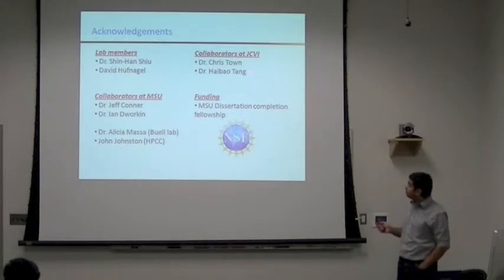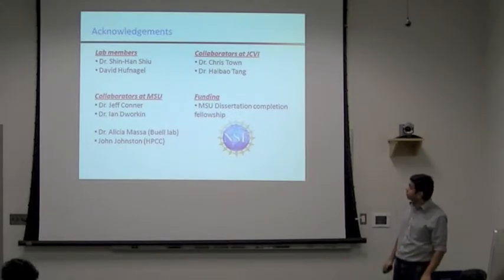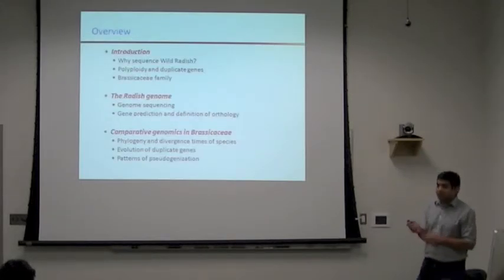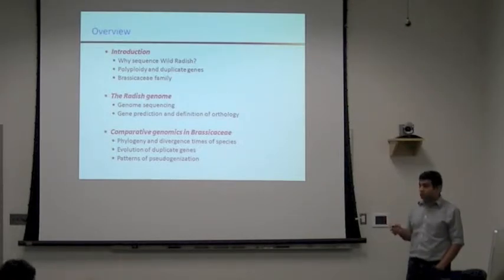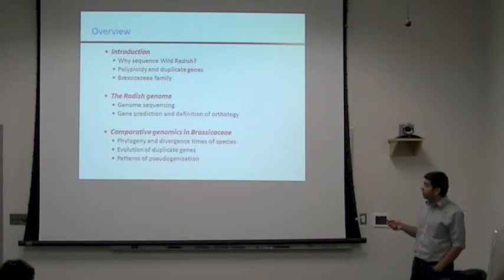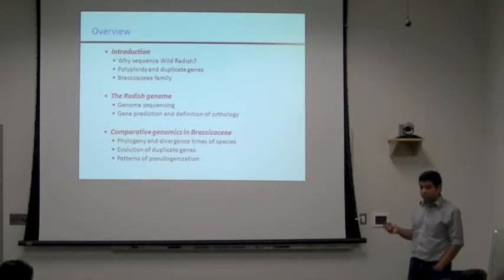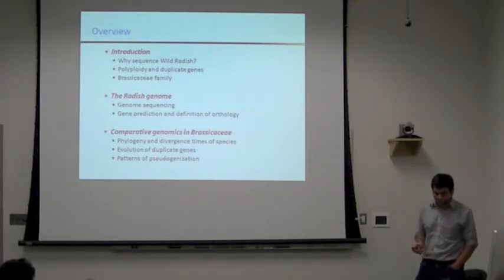This project is a collaborative project between Dr. Jeff Conner, Ian, and Shemhan. Alicia Massa from Robin Beer's lab and John Johnstrand at HPCC have also helped at various stages. We also have collaborators at the Craig Venter Institute. My talk is divided into three major parts: a brief introduction about why we are sequencing radish, the evolution of polyploidy and duplicate genes, and how we use this information to look at divergence times and patterns of pseudogenization.